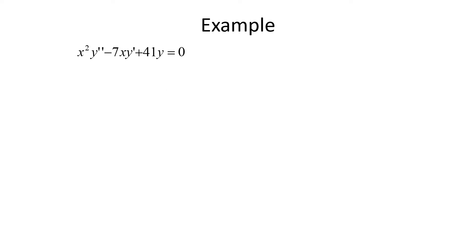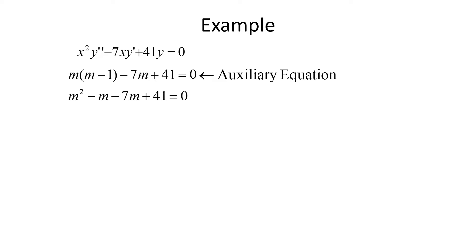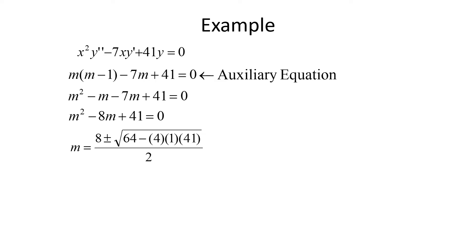For the third example, x²y'' - 7xy' + 41y = 0. The auxiliary equation is m(m-1) - 7m + 41 = 0, which simplifies to m² - 8m + 41 = 0. Using the quadratic formula: m = (8 ± √(64 - 4·1·41)) / 2 = (8 ± √(-100)) / 2.